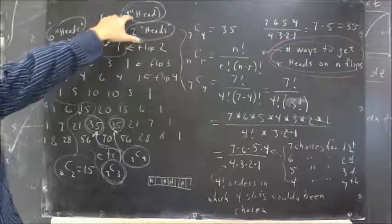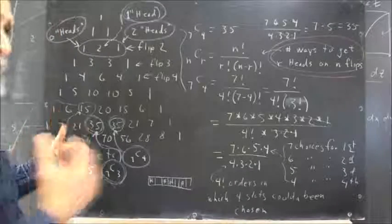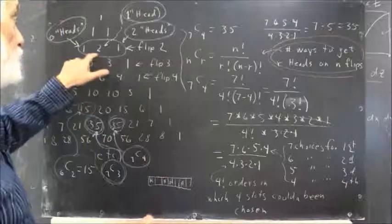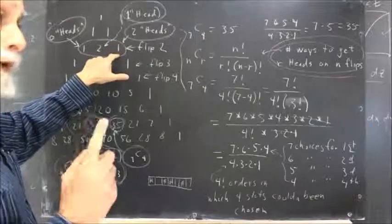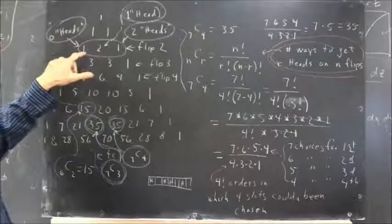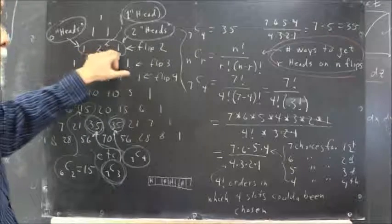There are 2 ways to get 1 head, and we should be very familiar with that by now. We could get heads, tails, or we could get tails, heads. And then to get 2 heads, there's one way. So these numbers correspond with flipping 2 coins to the number of ways of getting 1, 2, and 3 heads.